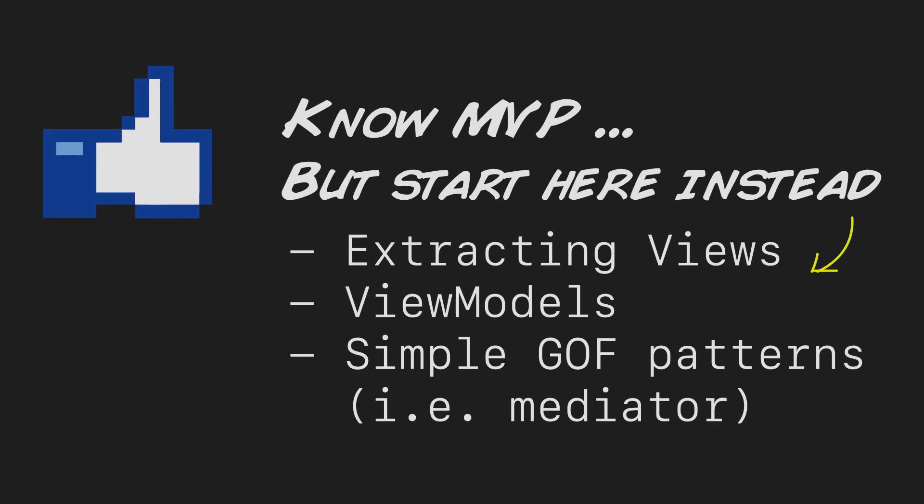Overall, it's not my favorite pattern for taking large view controllers and breaking them up into smaller ones, which is really what we're trying to do here. I think there are other approaches I would try before reaching for MVP. In upcoming episodes we're going to look at how you can extract views, make use of view models, and use simple Gang of Four patterns like the mediator — while still having access to UIKit and Cocoa patterns in our tests and design.